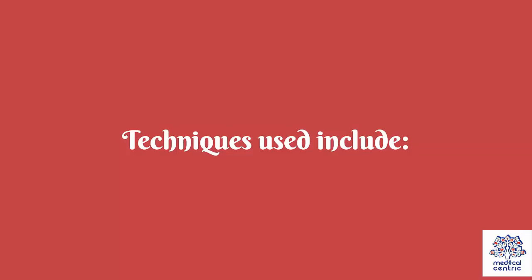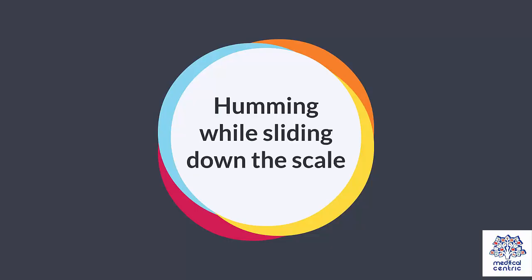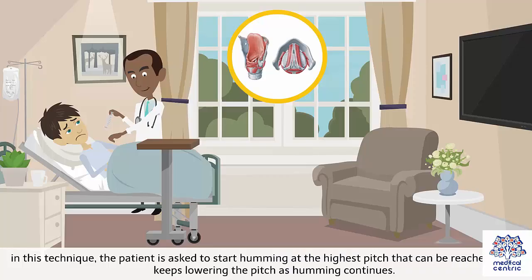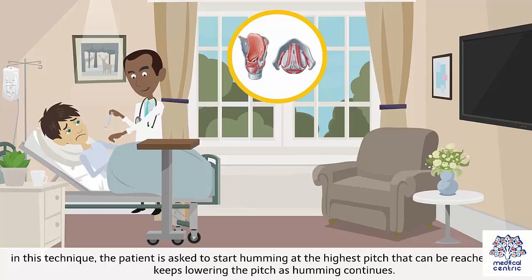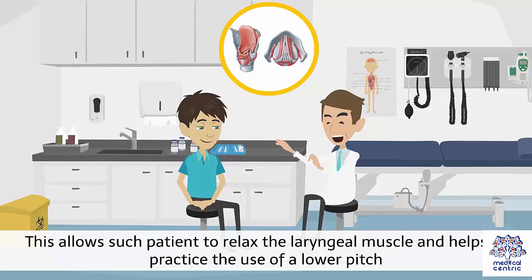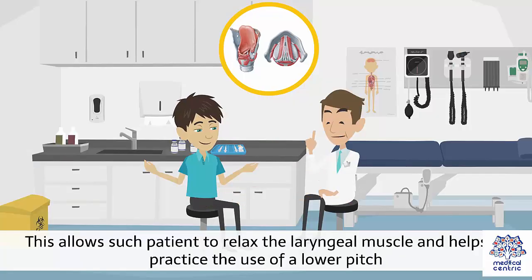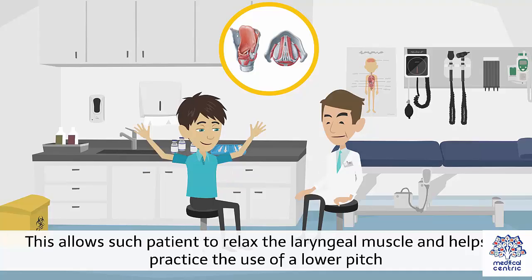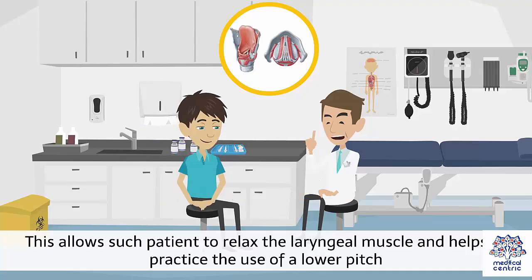Techniques used include humming while sliding down the scale. In this technique, the patient is asked to start humming at the highest pitch that can be reached and then keeps lowering the pitch as humming continues. This allows such patients to relax the laryngeal muscle and helps to practice the use of a lower pitch.